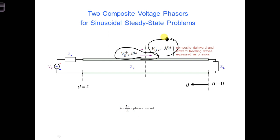Since all the reflections have already happened, they're all combined together. And to get the total voltage at any position on the transmission line, you add up these two composite voltage phasors.